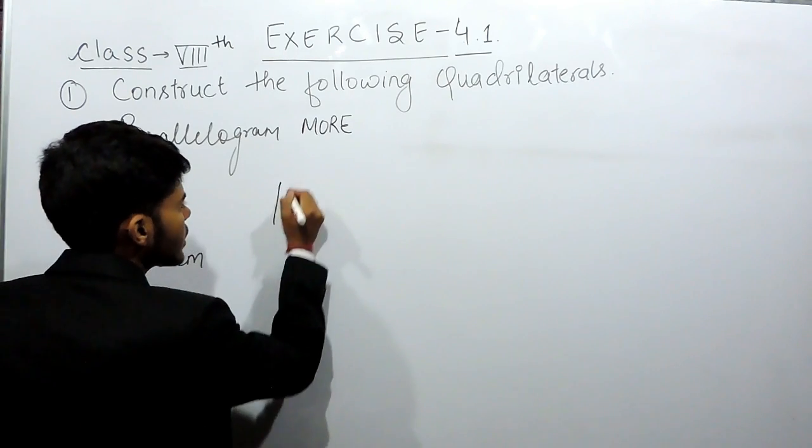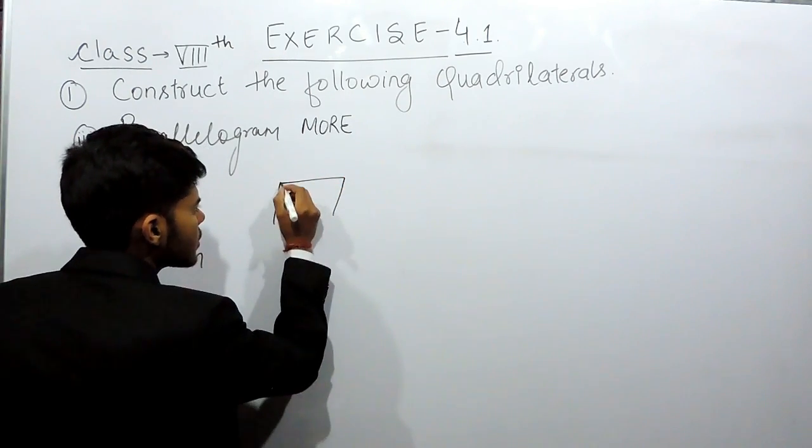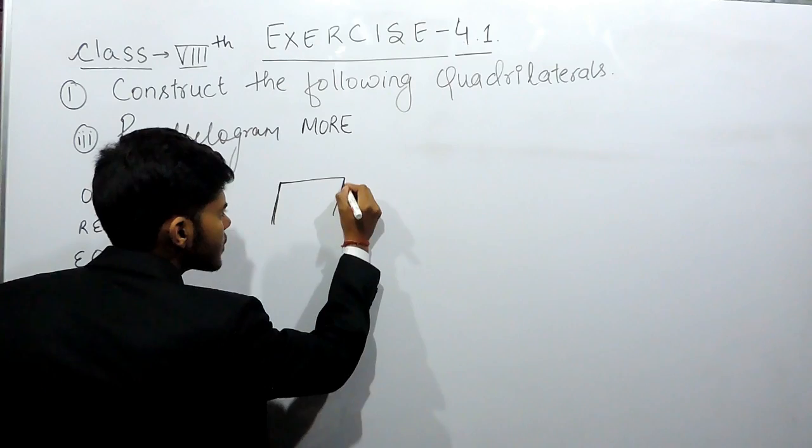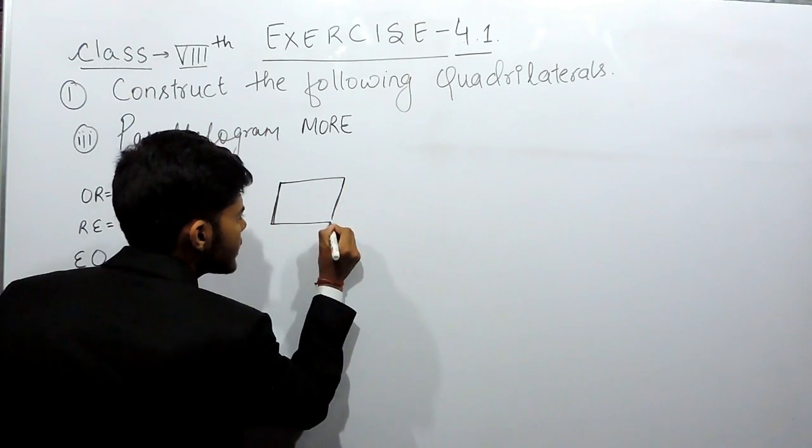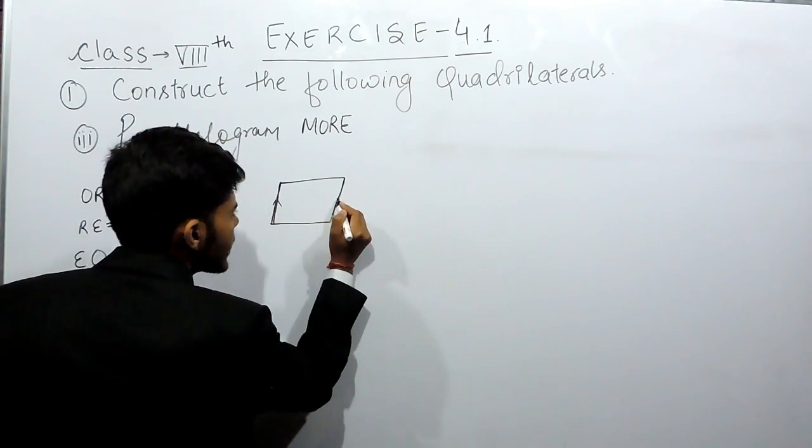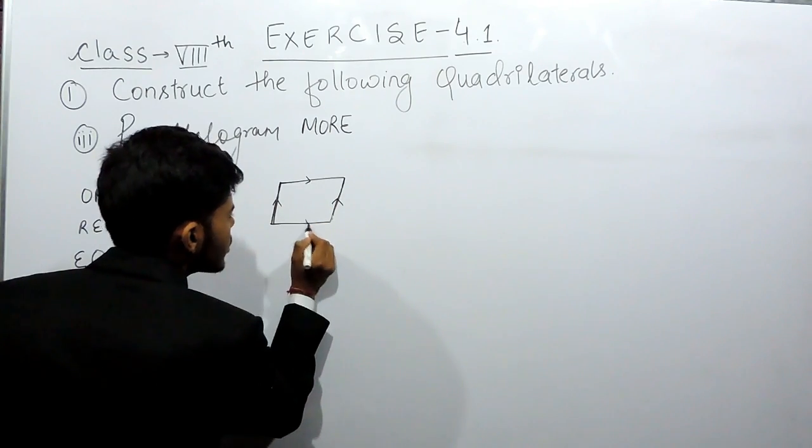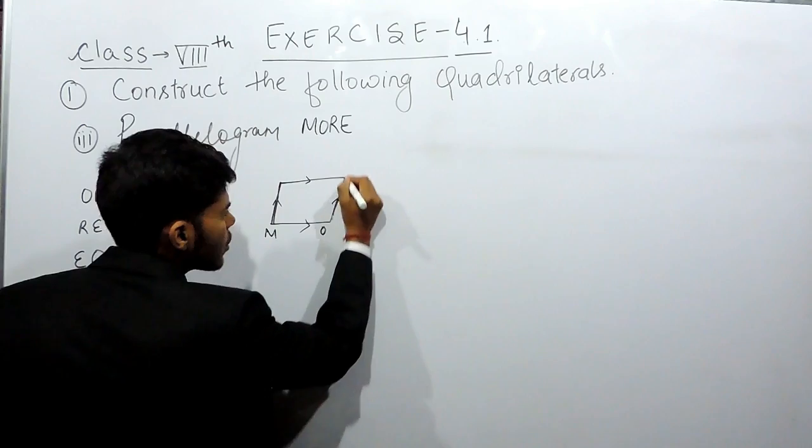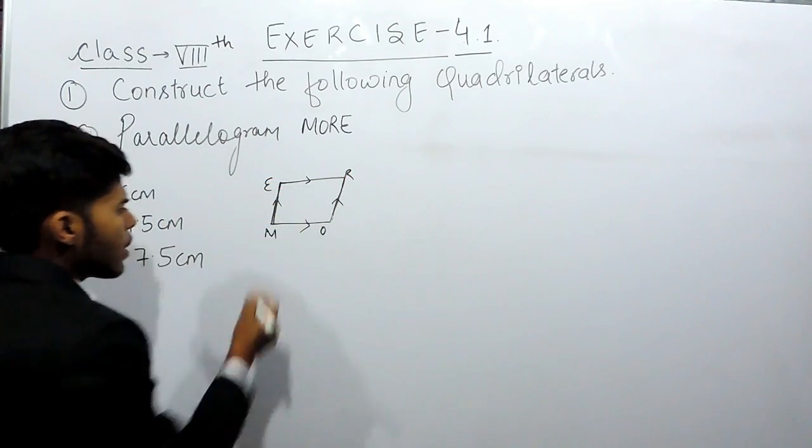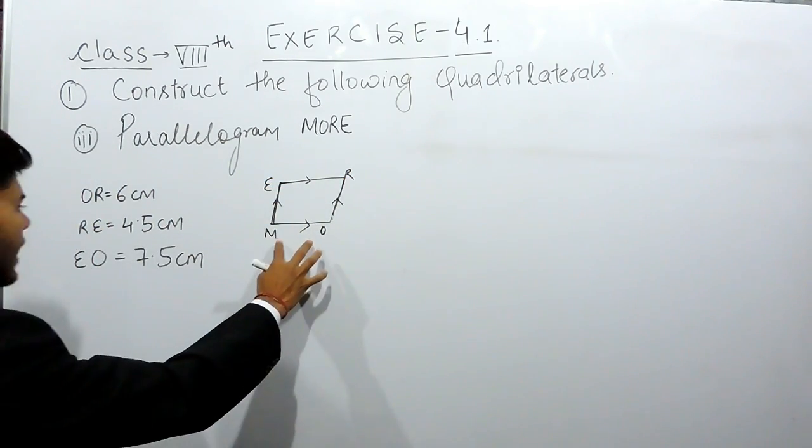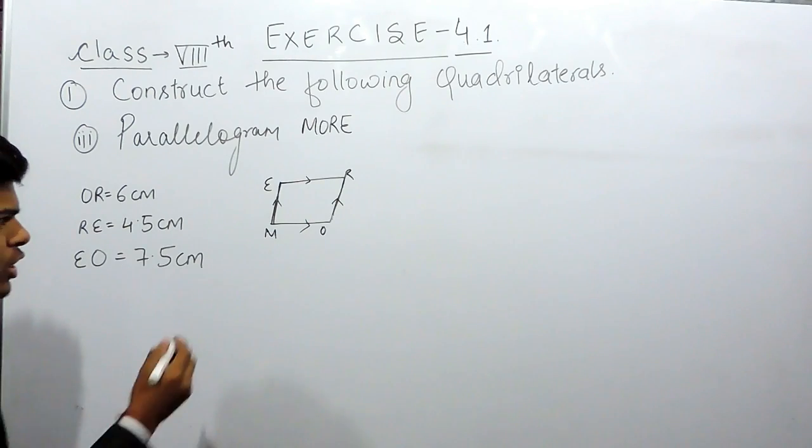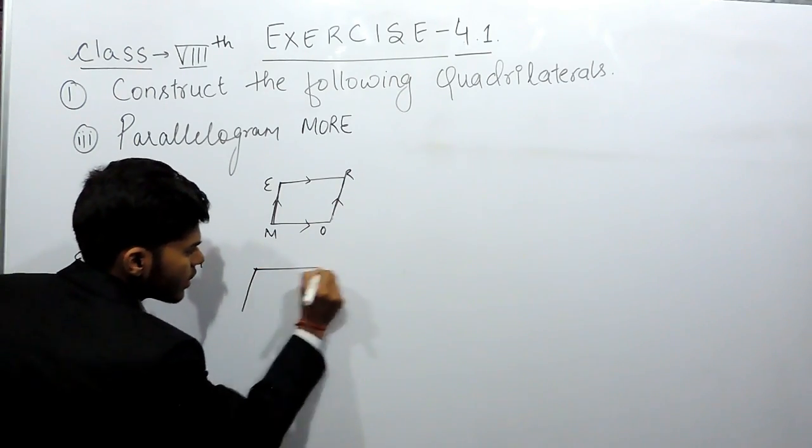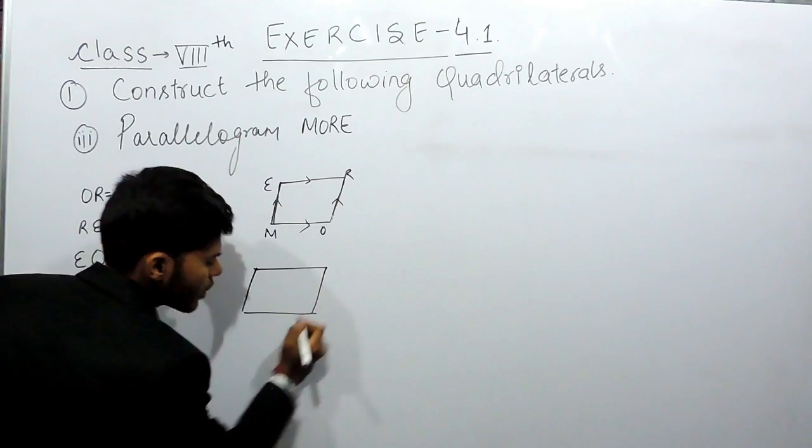So first of all we'll construct the rough figure. This is a parallelogram. These two sides are parallel and these two are parallel. Now we can write this like M-O-R-E, but you can see that the side M-O is not given to us. So we'll change the naming.